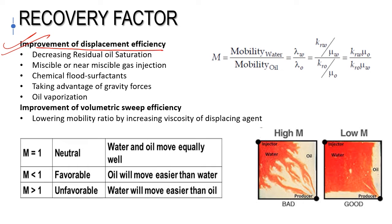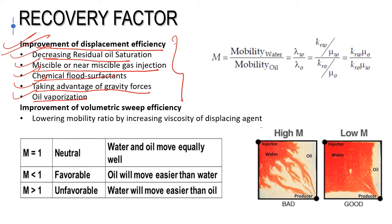To improve displacement efficiency I will decrease the residual oil saturation Sor — by miscible or near-miscible gas injection, chemical flood using surfactant, taking advantage of gravity forces, or oil vaporization. These things are involved in EOR processes, and I will discuss techniques to improve displacement efficiency when I discuss EOR processes.